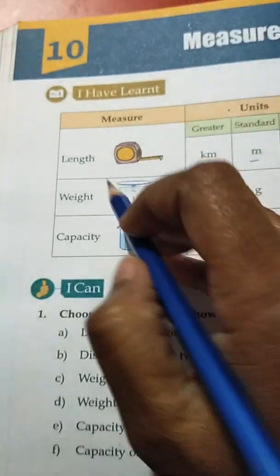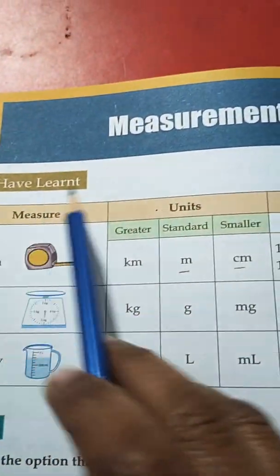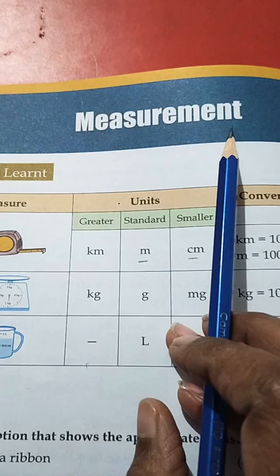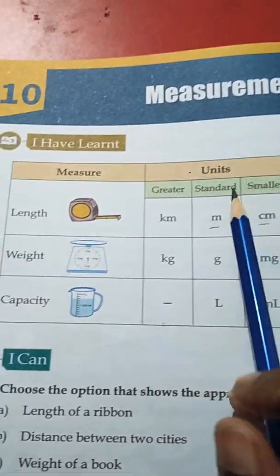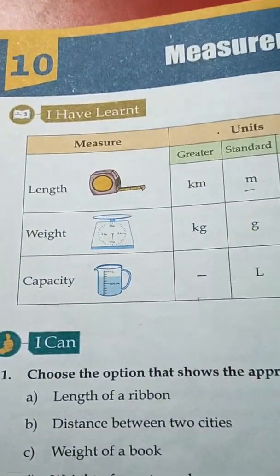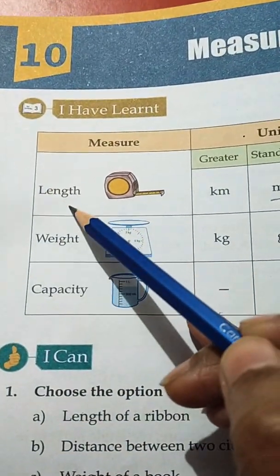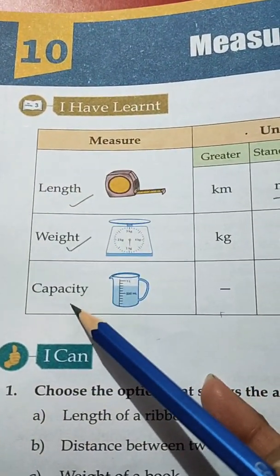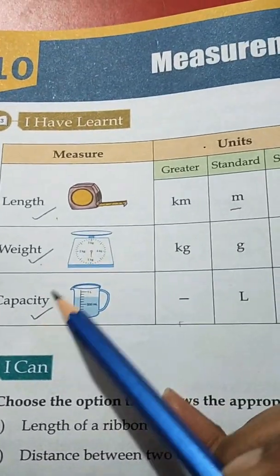Today we are going to start chapter 10 and the name of the chapter is Measurement. In this chapter there are three types of measurement: length, weight, and capacity.